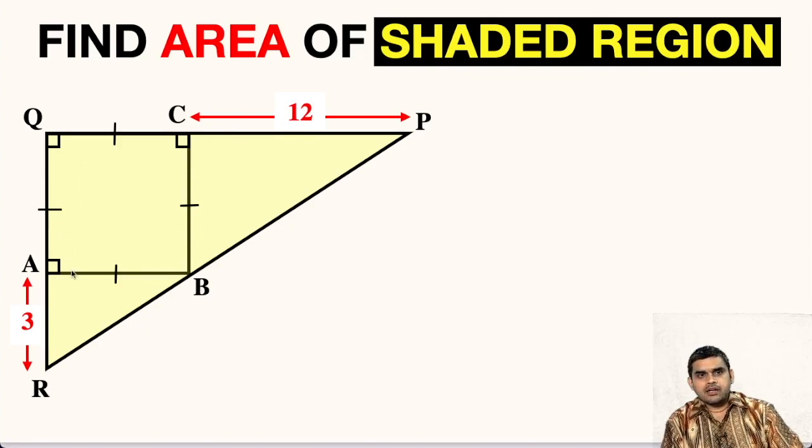That means area of this triangle PQR. But first of all, since the side of this square is not known, let us assume this side as X. This will be X, this side will also be X. So the side of the square is assumed as X.